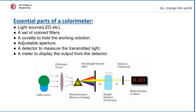Now we shall see the essential parts of a colorimeter. There is a light source, mainly an LED source, and a set of colored filters, a cuvette to hold the working solution, an adjustable aperture, a detector to measure the transmitted light, and a meter to display the output from the detector.